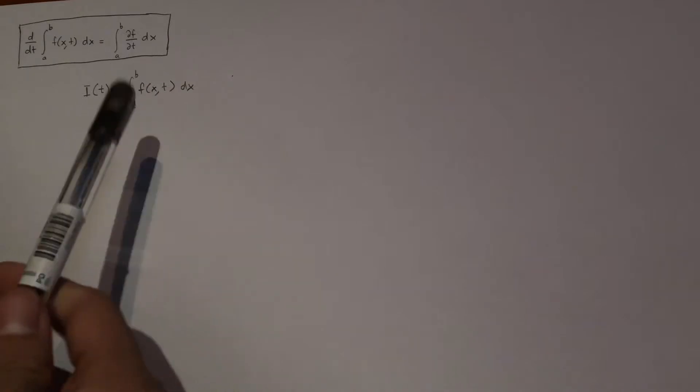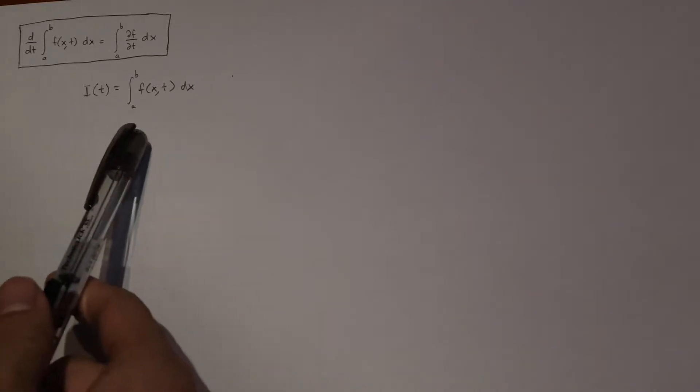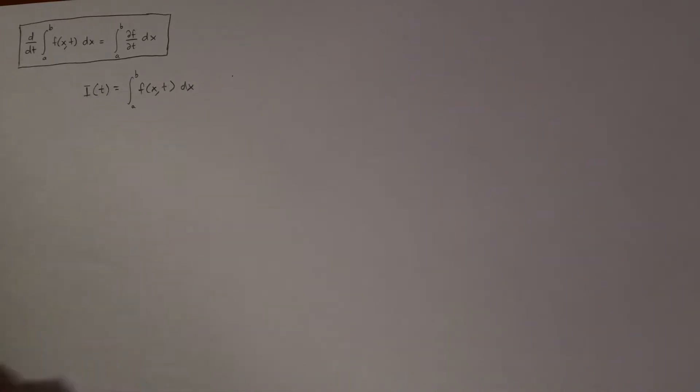So as you can see here, F of X, F here, is going to be a function that depends on both X and T. But because here you're already integrating it with respect to the X, the X would actually disappear after you integrate. And so then the integral only really varies according to T.